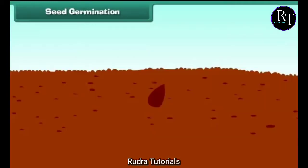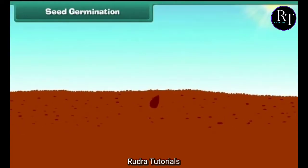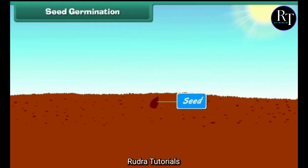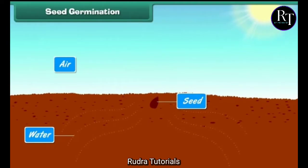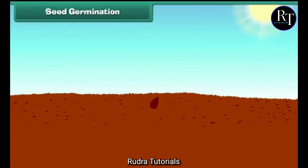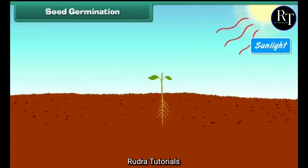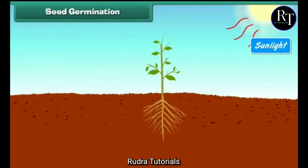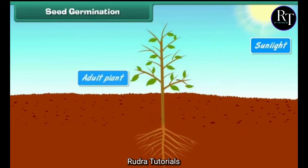Seed germination. Seeds start germinating in favourable conditions. Water, air and warmth are required for a seed to germinate. When a seed absorbs water, it swells up and the seed coat becomes soft. The roots of the germinating plant appear first and grow towards the earth. After that, the shoot germinates upwards towards sunlight, and leaves start growing on the shoot. The young plant is called a seedling, which grows into an adult plant.